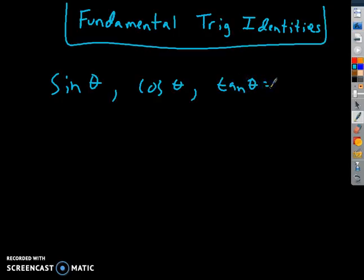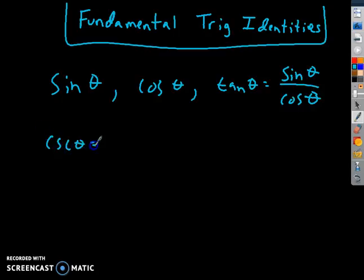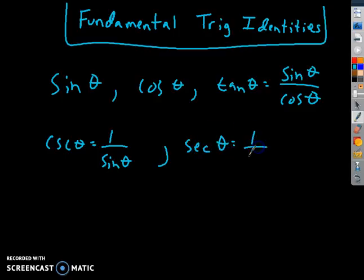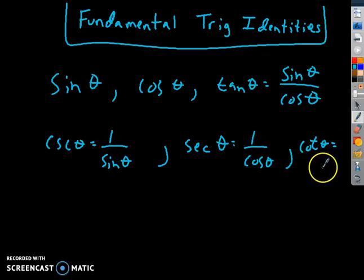You also have to know that tan of theta equals sine of theta over cosine of theta. Some other basic ones are cosecant of theta is equal to 1 over sine, and secant of theta is equal to 1 over cosine. And cotangent of theta is the reciprocal of tangent, so cosine of theta over sine of theta.